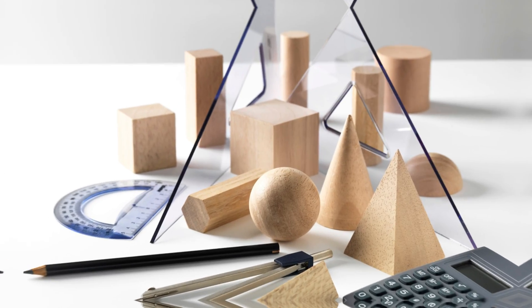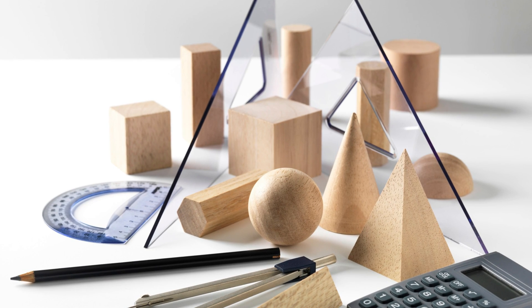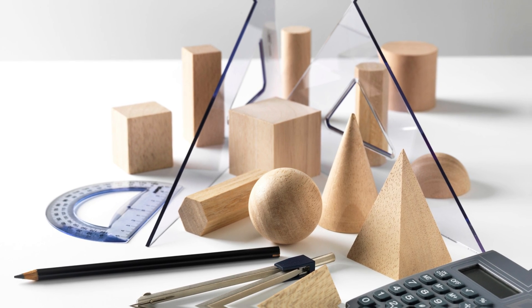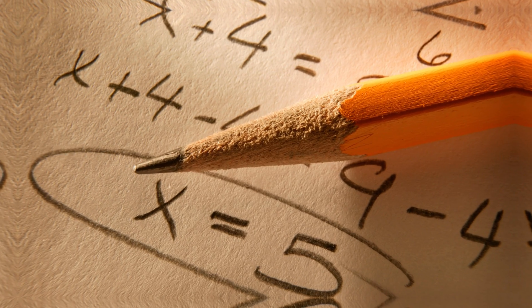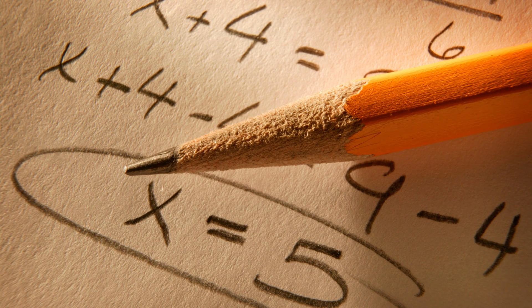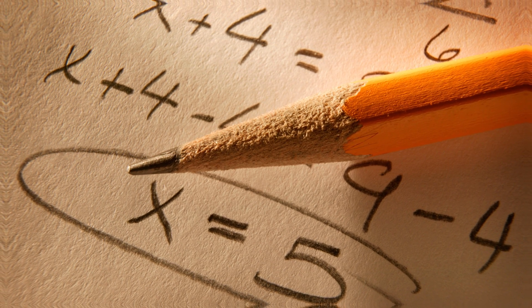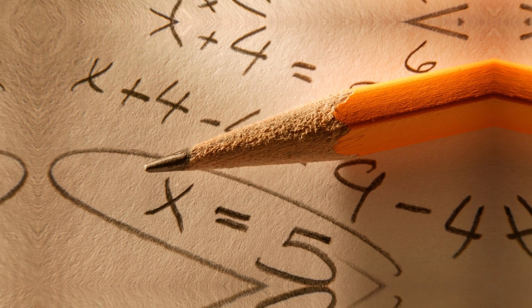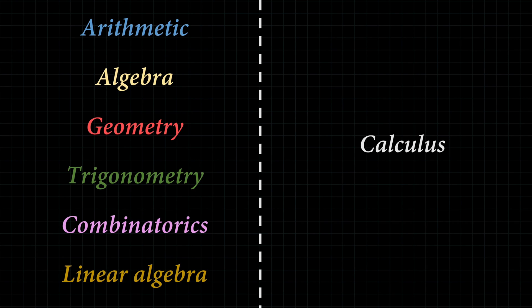Much like how geometry is a branch of mathematics that focuses on properties of shapes, and algebra is a branch of mathematics that focuses on the manipulation of equations and variables, calculus is just another branch of math — except it's a bit different than all the other types of math, because calculus deals with continuous change. In other words, dynamic math.